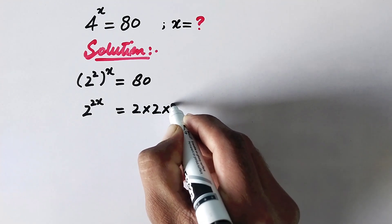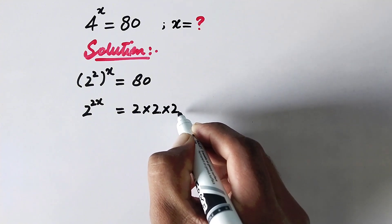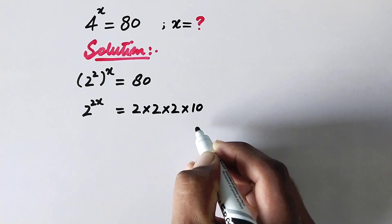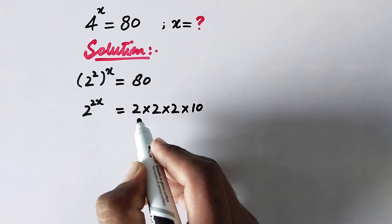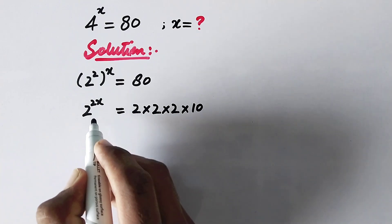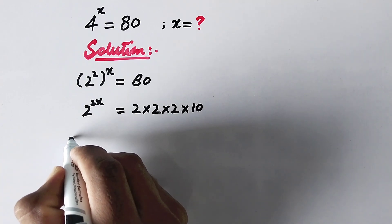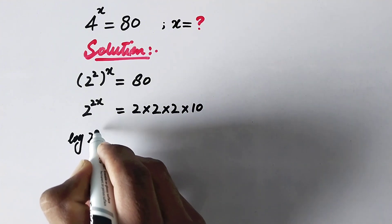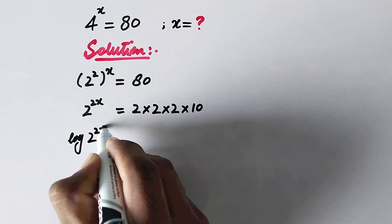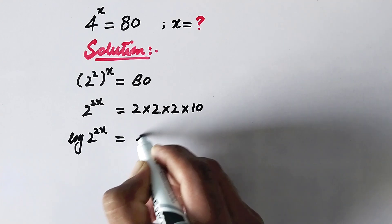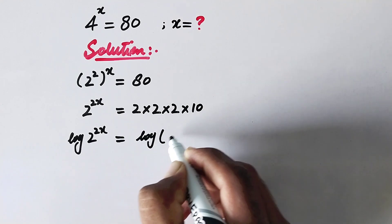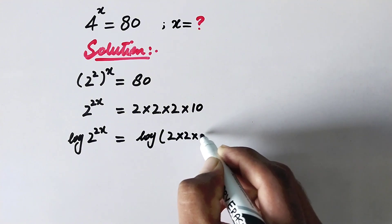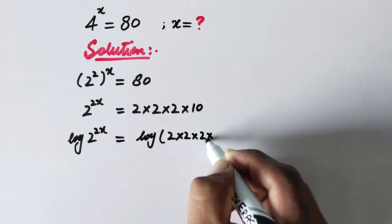This 80 is the same as 2 times 2 times 2 times 10. So now what we will do next is take log on both sides of the equation. So here it will be log of 2 to the power 2x is equal to log of 2 times 2 times 2 times 10.